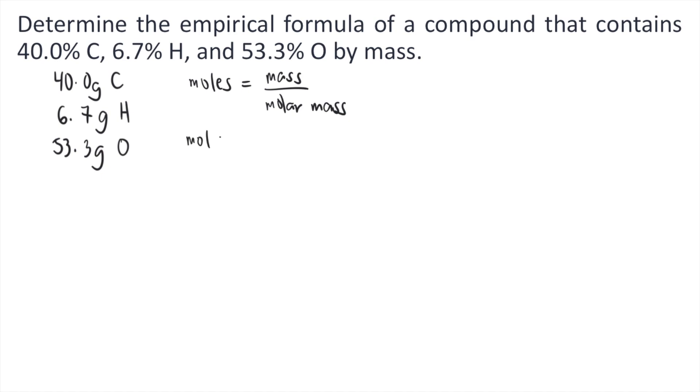For the moles of carbon, the mass of carbon is 40 grams divided by, if you look at your periodic table, the molar mass of carbon is 12.01 grams per mole. So 40 divided by 12.01, that's equal to 3.33 moles of carbon.